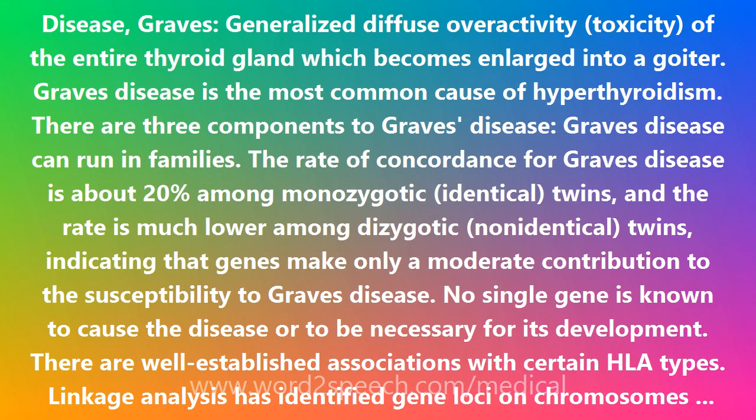There are three components to Graves' disease. Graves' disease can run in families. The rate of concordance for Graves' disease is about 20% among monozygotic (identical) twins, and the rate is much lower among dizygotic (non-identical) twins, indicating that genes make only a moderate contribution to the susceptibility to Graves' disease. No single gene is known to cause the disease or to be necessary for its development. There are well-established associations with certain HLA types. Linkage analysis has identified gene loci on chromosomes 1, 4Q31, 20Q11.2, and XQ21 that are associated with susceptibility to Graves' disease.